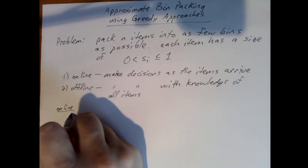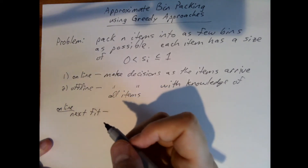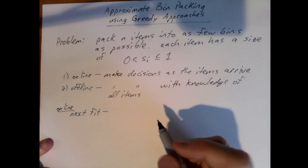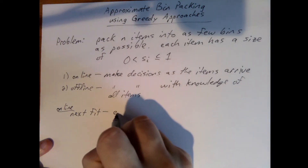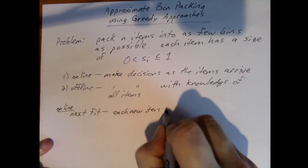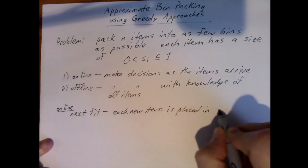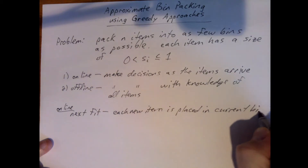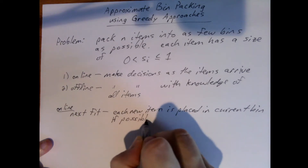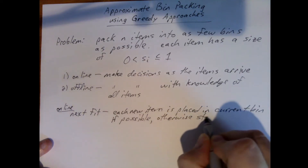Let's look at online algorithms first. The first one we're going to look at is called Next Fit. The way it works is that each new item is placed in the current bin if possible, meaning there's room for it. Otherwise, we start a new bin.